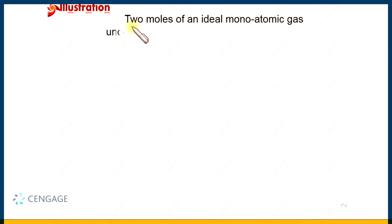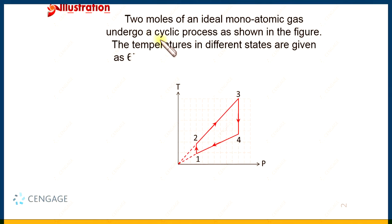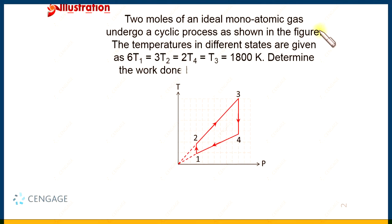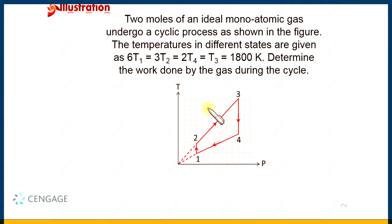In this illustration, 2 moles of an ideal monoatomic gas undergo a cyclic process as shown in the figure. You can observe here this is the T-P diagram — temperature versus pressure diagram — and this is the cyclic process because it is a closed one. We are given a temperature relation: 6T₁ = 3T₂ = 2T₄ = T₃ = 1800 Kelvin. So let us write the temperature relationship.